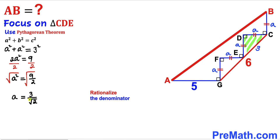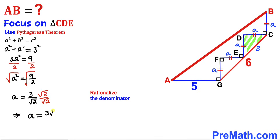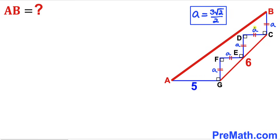Now we are going to rationalize the denominator by multiplying and dividing by √2. Since √2 × √2 = 2, our lowercase a value simplifies to 3√2 divided by 2. So a = 3√2/2.